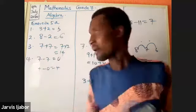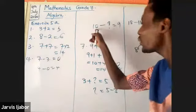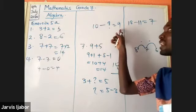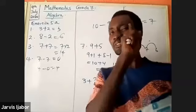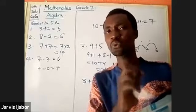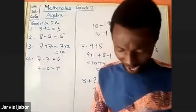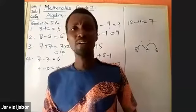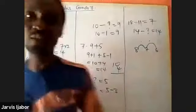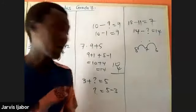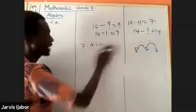Ten minus a number equals nine. Look closely at ten and nine — they are very close numbers. The number after nine is ten, so I need to remove one from ten to get nine. The answer is one. Next: fourteen minus a certain number equals fourteen. I have not made any movement, so the answer is zero.